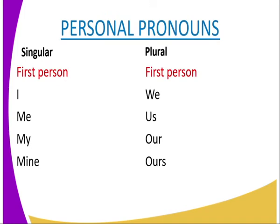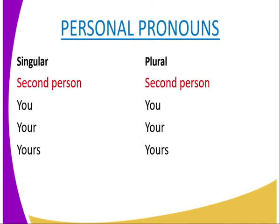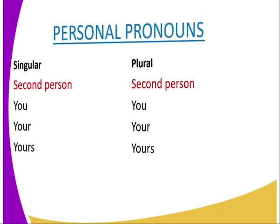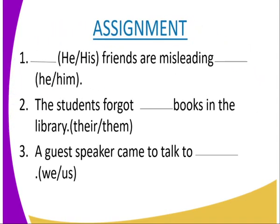Personal pronouns appear in both singular and plural forms: I to me, we and us, my to our, mine to ours. For the second person, 'you' does not change — it remains 'you' in both singular and plural. For the third person, he, him, and his are masculine referring to the male gender; she, her, and hers are feminine referring to the female gender; 'it' is neuter and cannot appear in masculine or feminine form. Their plural forms are: they, them, their, and theirs.